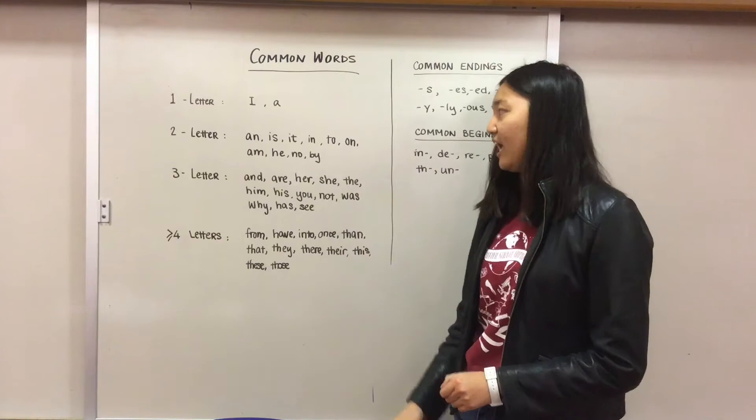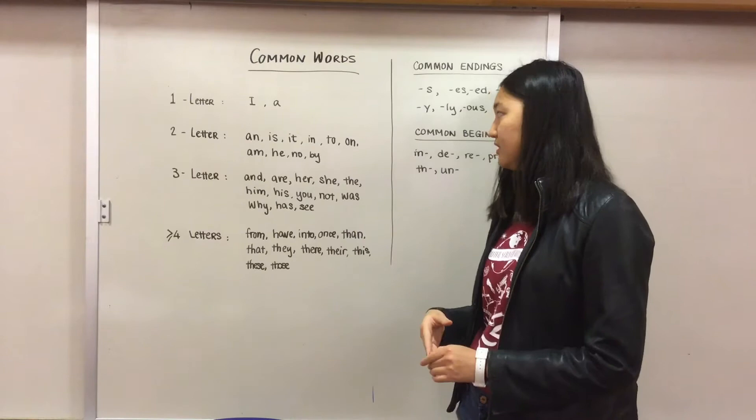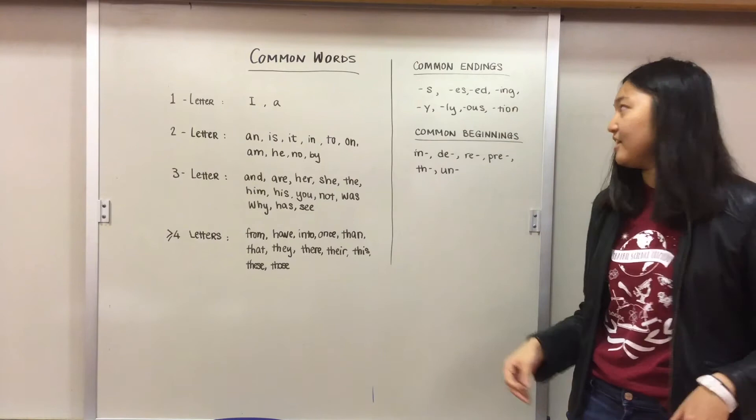And then two-letter words will be like 'and', 'is', 'it', and some of these start with I, so you can keep an eye out for those, and then 'to', 'on', 'an', et cetera.